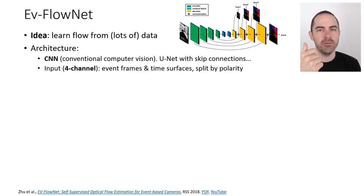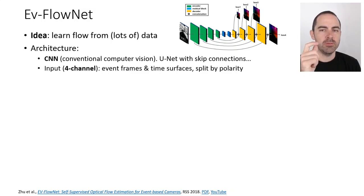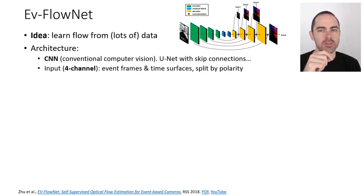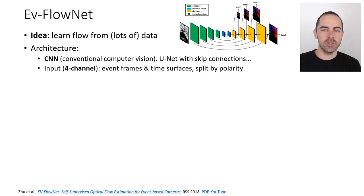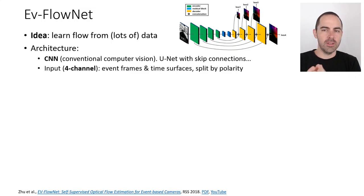Additionally, split by polarity, you compute the time surfaces — one for ON events and one for OFF events. You get these four images together as a 3D array and pass it to the neural network.